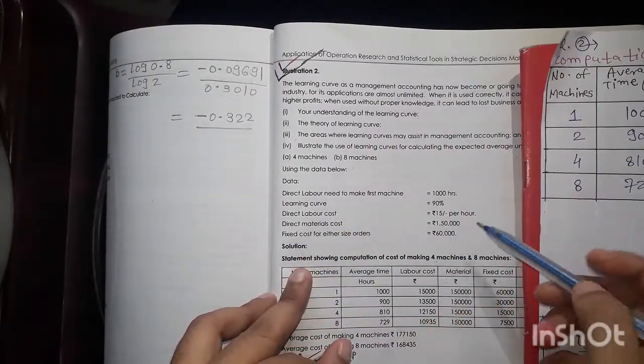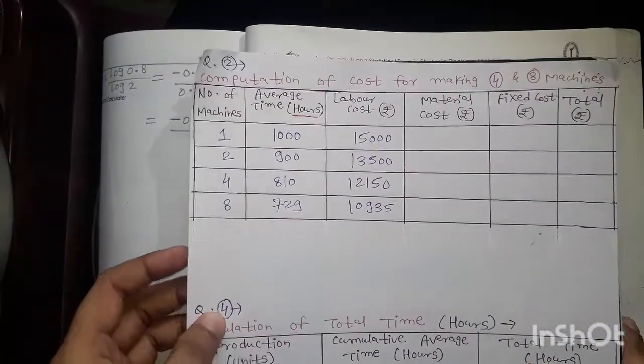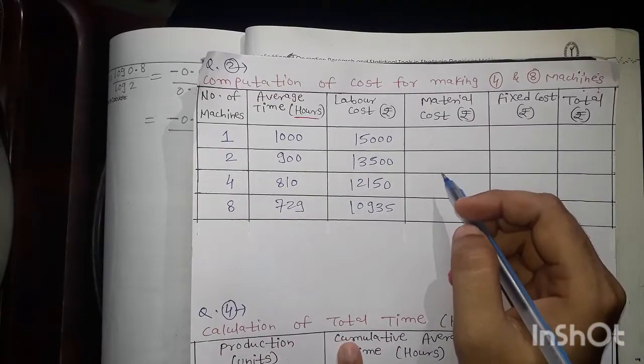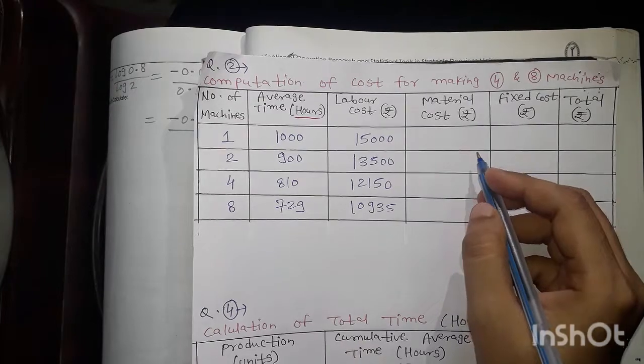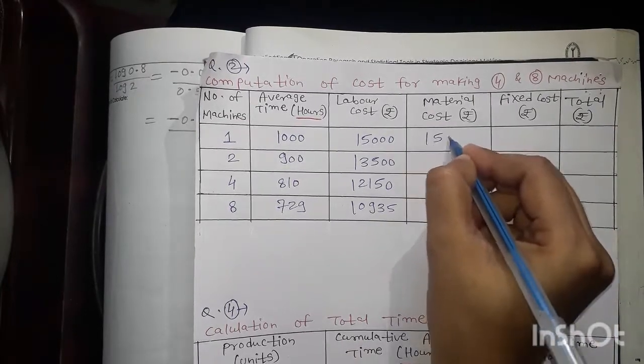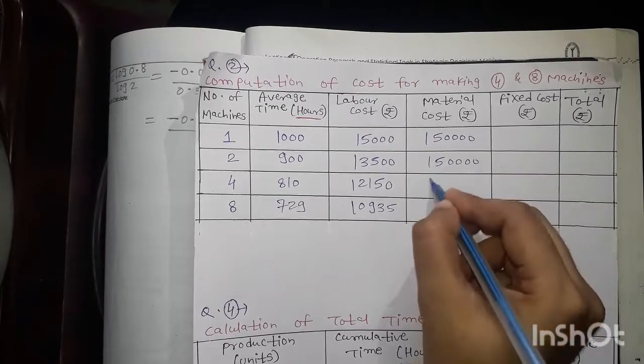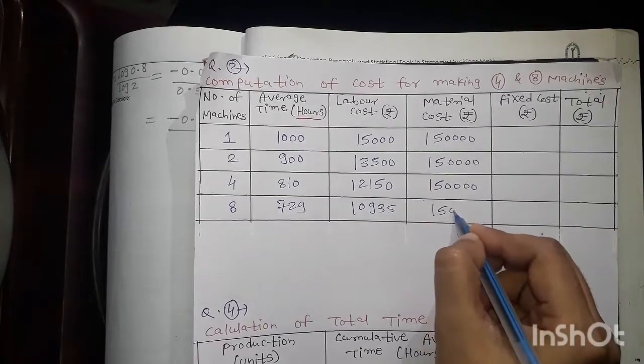Now we have to go for material cost. Material cost we have been given 150,000. Now hours differ but material cost will remain same. So each machine's material cost will remain same. So 150,000, 150,000, 150,000, and 150,000.